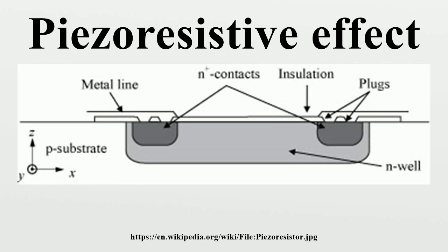Piezo-resistivity in metals: Usually the resistance change in metals is mostly due to the change of geometry resulting from applied mechanical stress. However, even though the piezo-resistive effect is small in those cases, it is often not negligible. In cases where it is, it can be calculated using the simple resistance equation derived from Ohm's law, where conductor length is in meters and cross-sectional area of the current flow is in m². Some metals display piezo-resistivity that is much larger than the resistance change due to geometry.